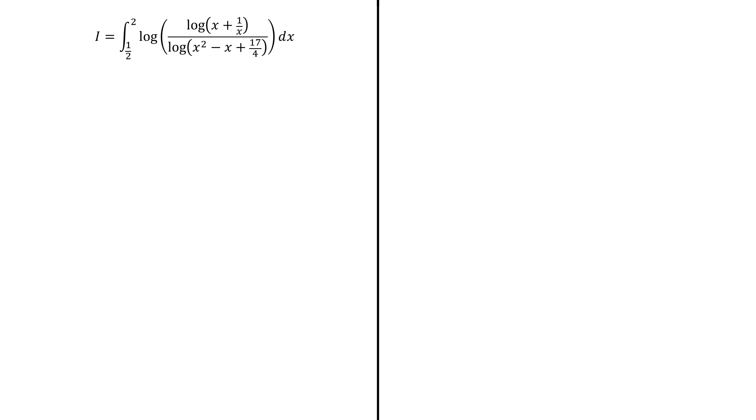So we start by the term under the third log. And we notice that 17 over 4 is just 4 plus 1 over 4. So this quantity turns out to be x minus 1 over 2 square plus 4. Actually, this form a square plus 4 is very interesting here. We will see in a while.